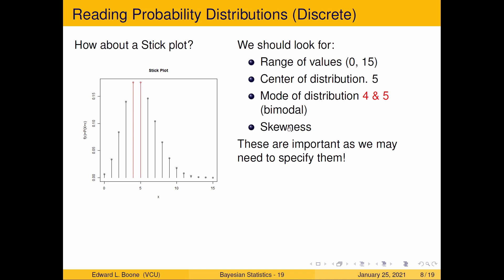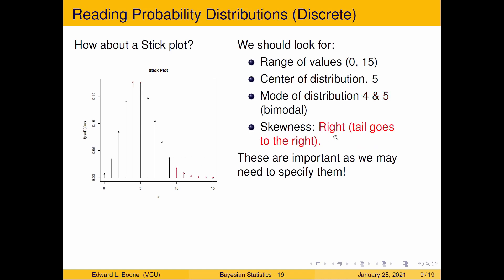It's bimodal — I would write that along with it, because it has two modes. And the skewness: here you can see that it's right-tailed, because the tail goes out to the right. It looks like it's being pulled by your right hand if you were to take a symmetric distribution and pull on it. There's a more formal definition, but we'll talk about that later. These are important because later we're going to need to specify these when setting up a prior distribution.